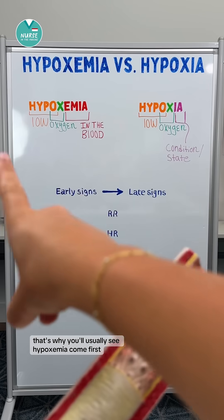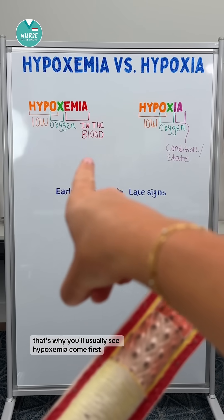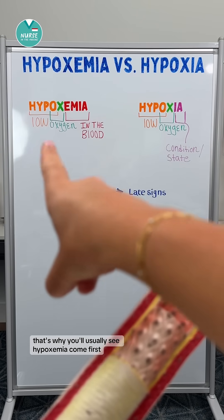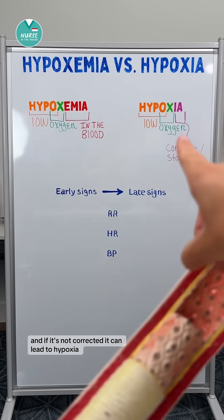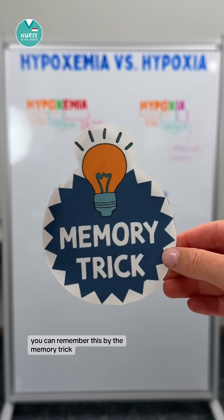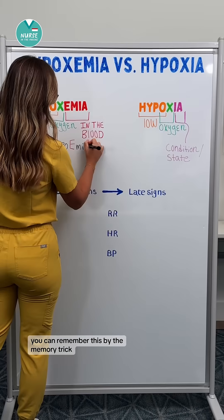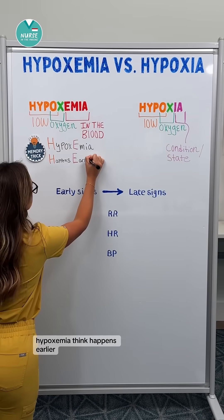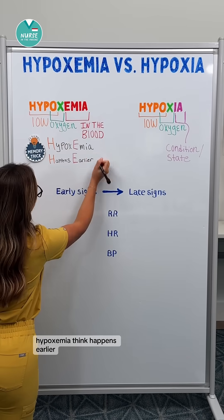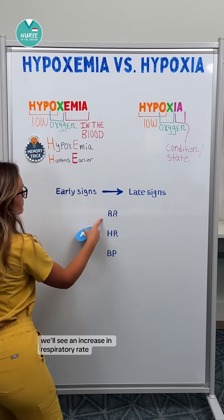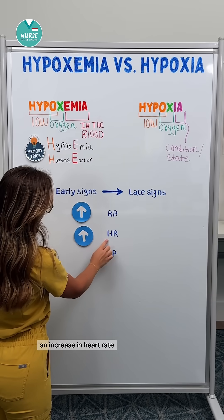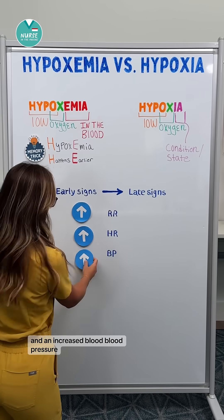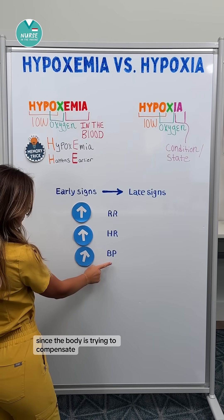That's why you'll usually see hypoxemia come first, and if it's not corrected it can lead to hypoxia. You can remember this with the memory trick: hypoxemia — think 'happens earlier.' Early signs include an increase in respiratory rate, heart rate, and blood pressure, since the body is trying to compensate.